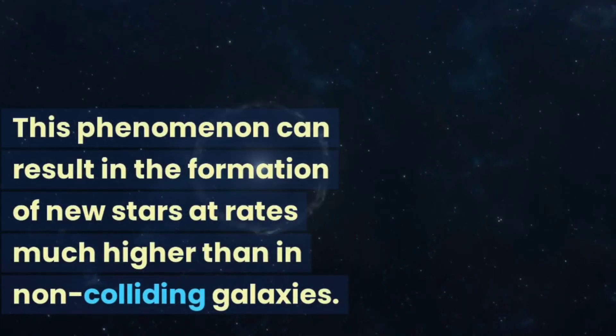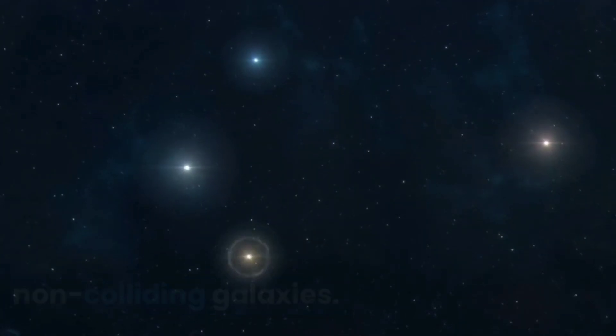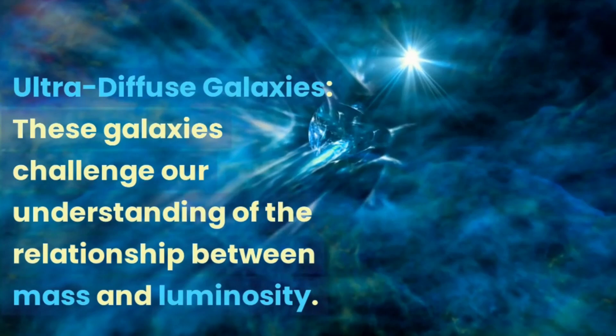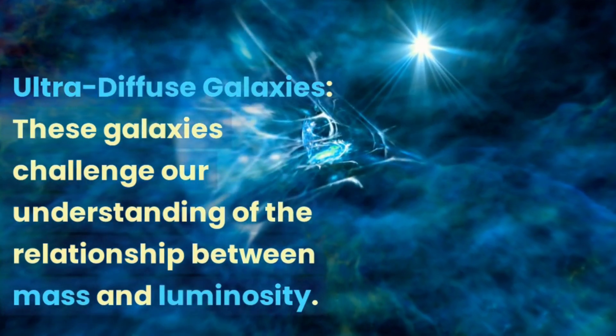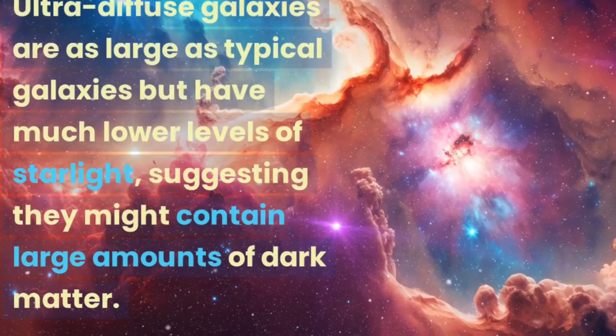Ultra-Diffuse Galaxies - these galaxies challenge our understanding of the relationship between mass and luminosity. Ultra-diffuse galaxies are as large as typical galaxies but have much lower levels of starlight, suggesting they might contain large amounts of dark matter.